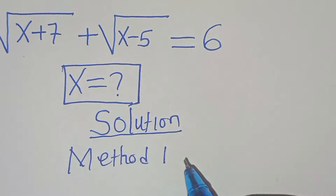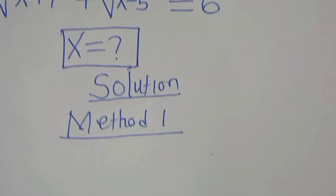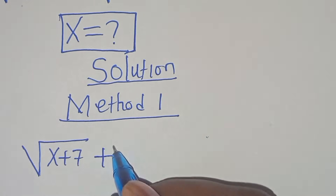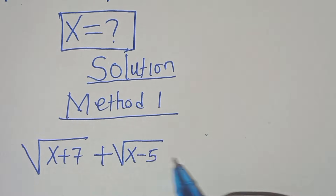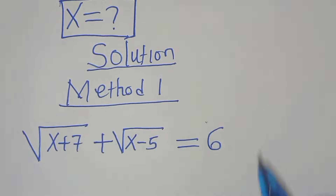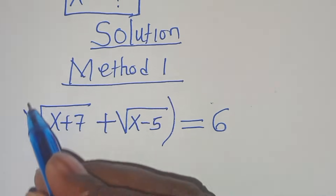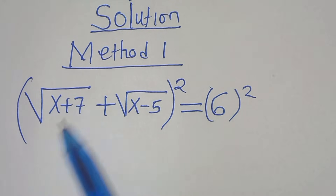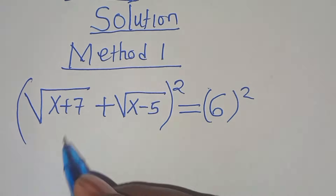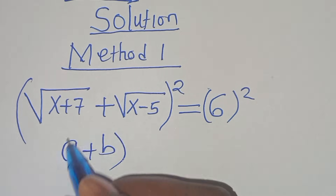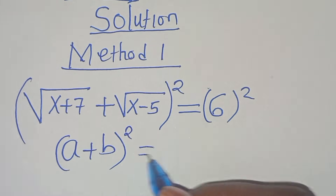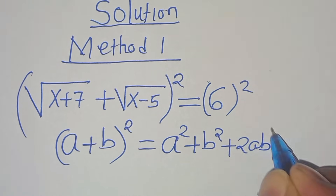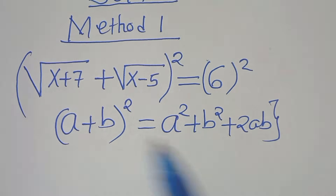Let's start with Method 1. In Method 1, we have the square root of x plus 7, plus the square root of x minus 5, equal to 6. The first thing to do here is to square on both sides. Now the square root of x plus 7, plus the square root of x minus 5, to the power of 2, is in the form of (a + b) squared, which can be expressed as a squared plus b squared plus 2ab.